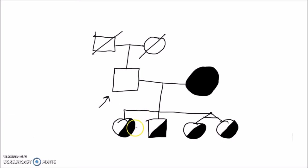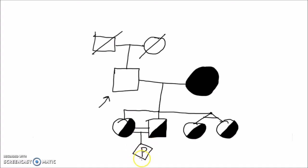Bob is about to have a grandchild. Two of his children had a consanguineous marriage, and you mark that with two lines, as opposed to the single line between Bob and Anne. Bob's children are about to have a child, and you mark that with a pea and a diamond. The diamond signifies that you do not yet know the sex of the child.